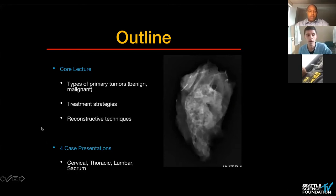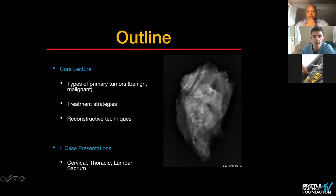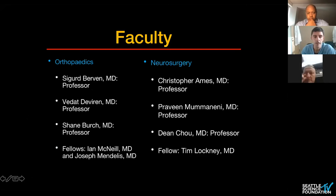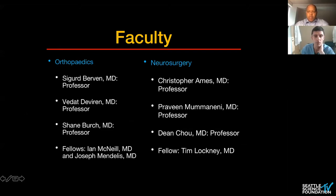As an outline for this talk, I'll start with a 20 to 30 minute discussion on types of primary spine tumors, benign and malignant, discuss treatment strategies for each, and also touch upon reconstructive techniques, but really the focus will be on four case presentations — one on the cervical spine, thoracic, and lumbar and sacral spine. We have faculty from both orthopedic and neurosurgery departments at UCSF, and I'd like to thank the fellows Ian McNeil, Joseph Mandeles, and Tim Lockney, both from orthopedics and neurosurgery, who will be presenting the cases.